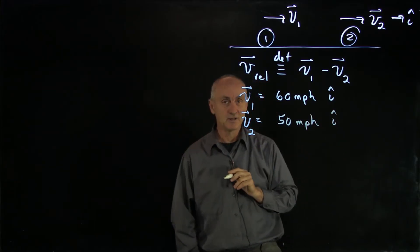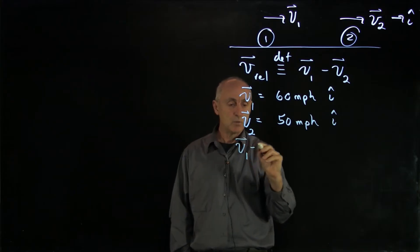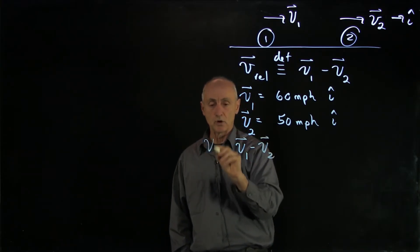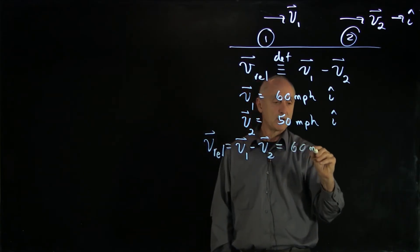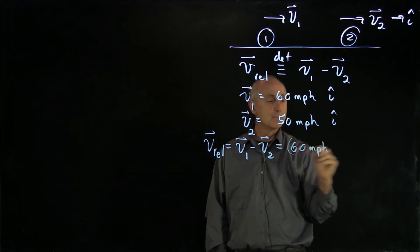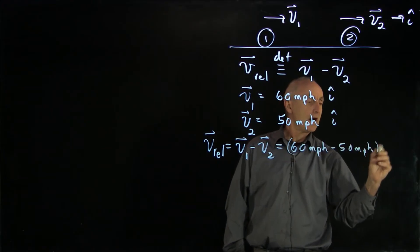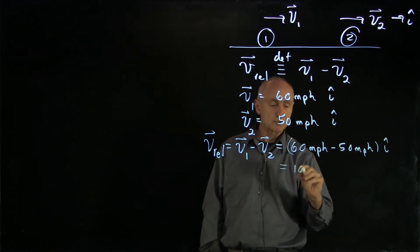And the relative velocity, v1 minus v2, so that's what we're calling v-relative, that's 60 miles per hour minus 50 miles per hour i-hat. And that's just 10 miles per hour.